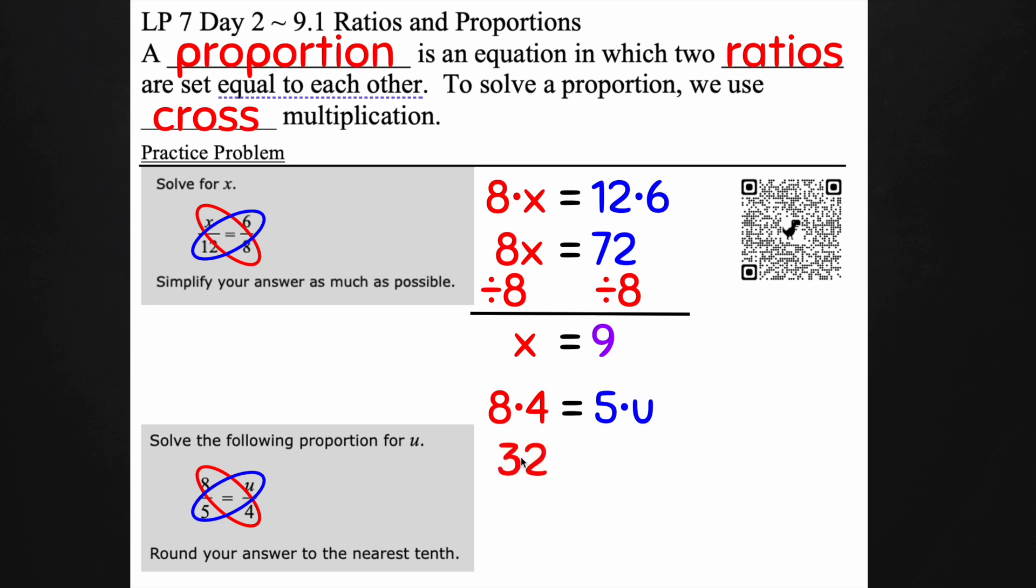So now 8 times 4 we get 32 and the 5u I'm just going to smush them together. We don't want to have the dot there anymore.